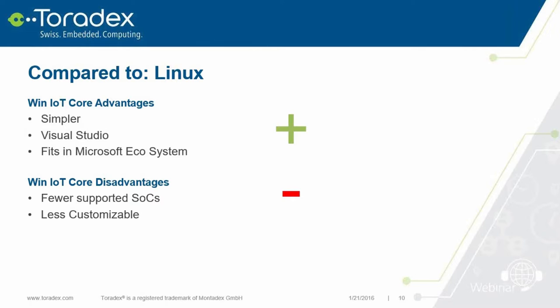Disadvantages compared to Linux: there are really not a lot of SoCs supported yet, and in general hardware support for IoT Core is much less than Linux. It's also less customizable — this can be a disadvantage if you need to target very low-end hardware.